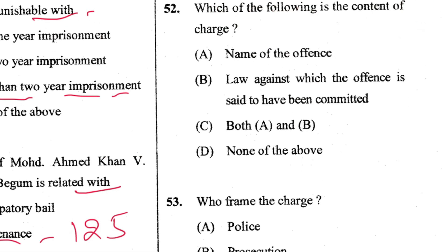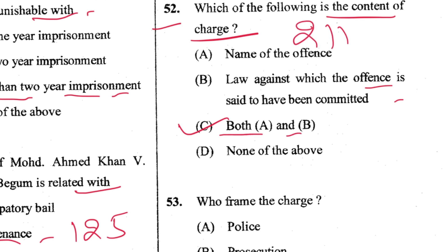Question 52: Which of the following is the content of a charge? The name of the offence and the law under which the offence is said to have been committed — both. C is the answer. Contents of charges are provided in Section 211 of CrPC.